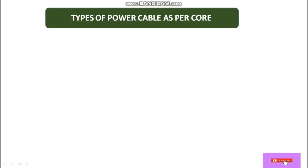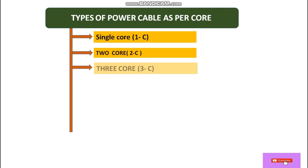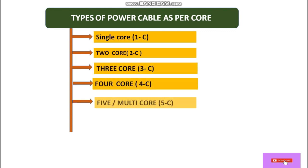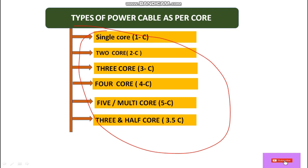So basically, what are the types of cable as per the cores? These are: first, single core; then two core or double core; then three core; four core; five core or multi-core cable; and then three and half core cable. These are the types of cable as per the cores.